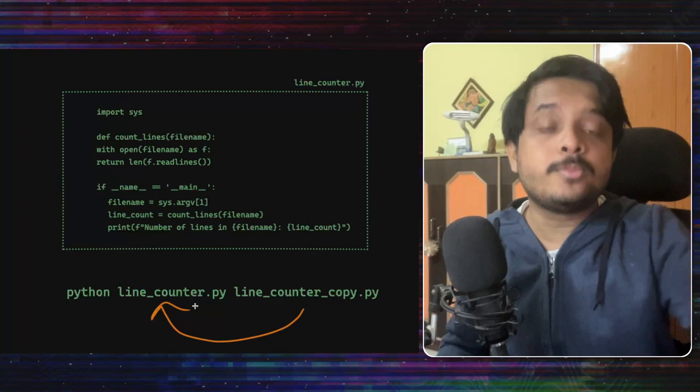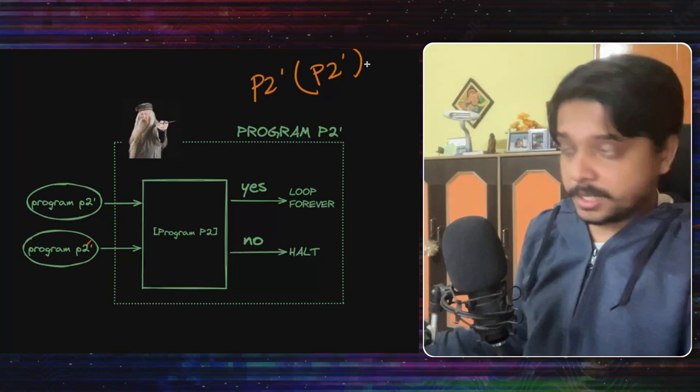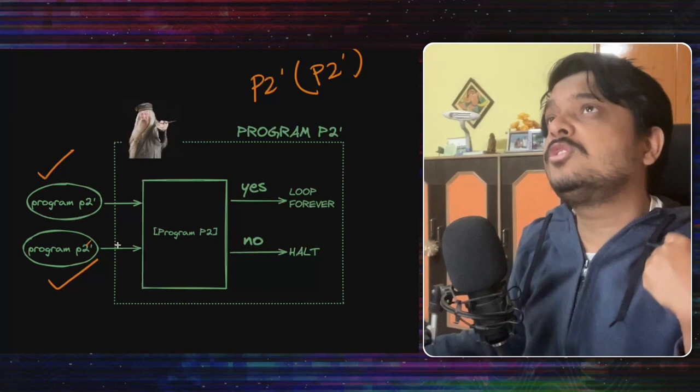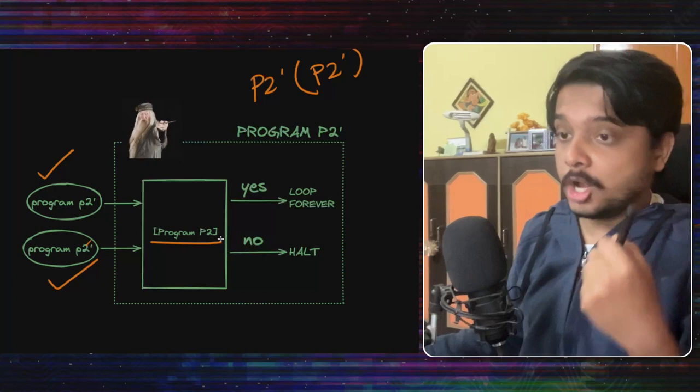You see, now we want to know what happens when P2 dash is done with the input of P2 dash. Will P2 dash halt or not halt? That is the question. So we pass it through P2 dash itself. So here our program is also P2 dash and our input is also P2 dash and the program we are passing it through is also P2 dash. This gets so confusing sometimes, right? But let's go on with it. So first it will face the program P2 which will tell will it halt or not halt. So we are giving it to P2. Now you see what happens.